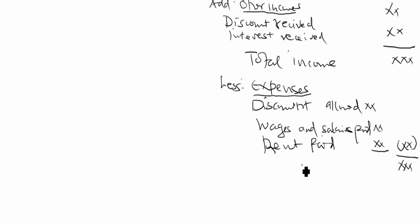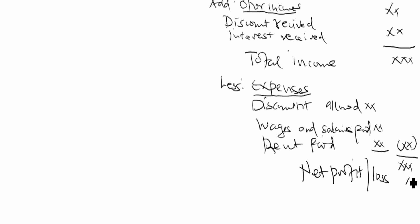Total income less total expenses as adjusted gives us the net profit — or if it is a loss, it should appear in brackets. This is how we prepare the net profit or loss, and that's how the income statement is prepared.